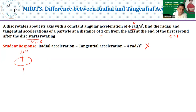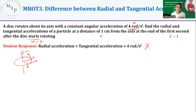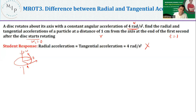Let us understand radial acceleration. Consider a particle at the rim, one centimeter from the center. The velocity at that point is tangential. After one second, the particle has moved to another point. The velocity there is again tangential to the new position. If you imagine whirling a particle on a string and cutting the string, the particle moves in a straight line tangential to the direction of rotation.